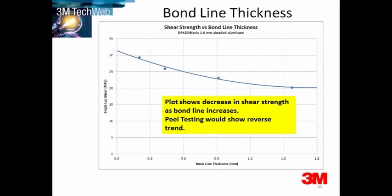This is a plot of bond line versus single lap shear strength. It's often assumed that more adhesive is a good thing in a joint, and this is true to a point. This plot actually shows a decrease in shear strength as the bond line increases for a structural adhesive. If it were a peel test, it would show the opposite trend, where the strength would increase with increasing bond line.